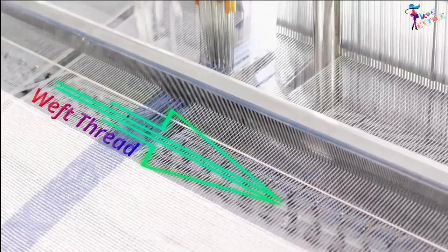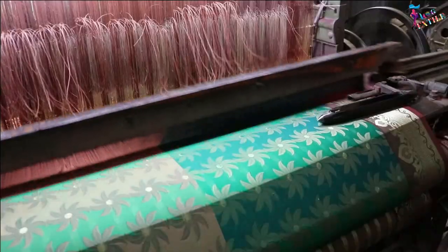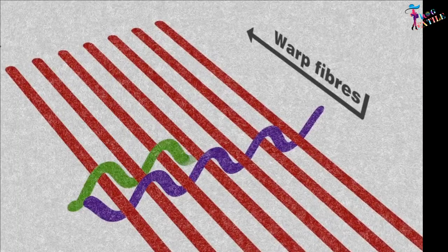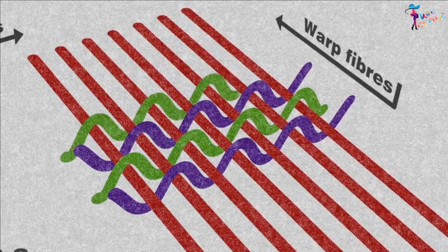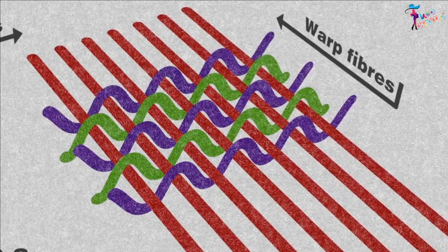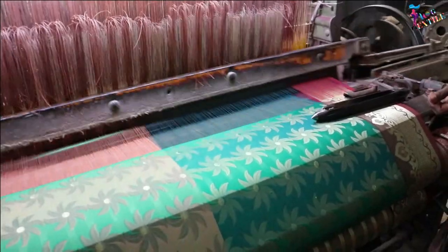Yarn that lies perpendicular to the fabric edges is called weft yarn. Weft yarns are threaded over and under the warp threads. The single thread of yarn that goes across the warp is known as a pick.